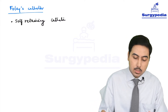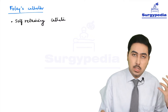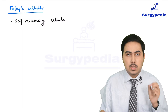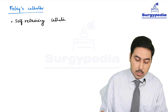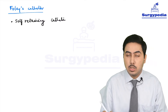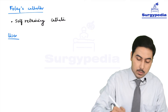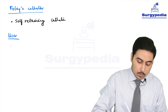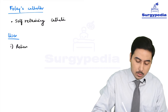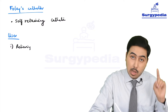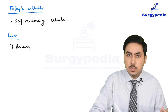Foley's catheter is a self-retaining catheter, and that is why it is the catheter of choice when we want the patient to be catheterized for some time. With a simple rubber catheter, the procedure is over and you just want a temporary function. But with a Foley's catheter, you may want to keep the patient catheterized for a few days. One use is relieving retention of urine — it is not the case that every patient with retention must have a simple rubber catheter; that is just the simplest method.